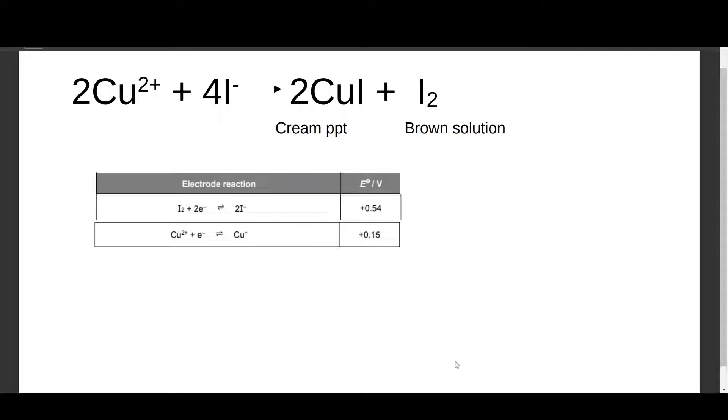In this video we'll take a look at this reaction between copper ions and iodide. During your practical, if you are to see a cream precipitate in brown solution being formed, or you are going to add copper ions to potassium iodide, this is something that you might be expecting. In fact, whenever you add it you'll get a cream precipitate in brown solution.